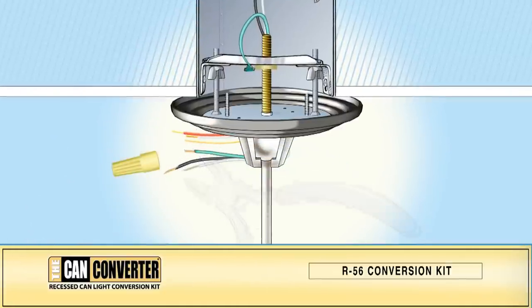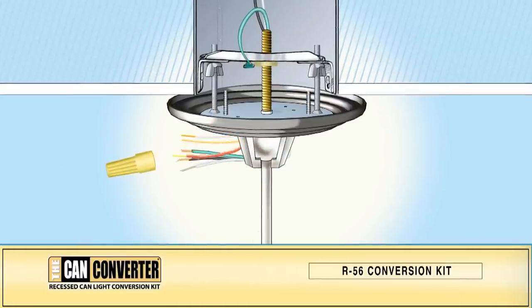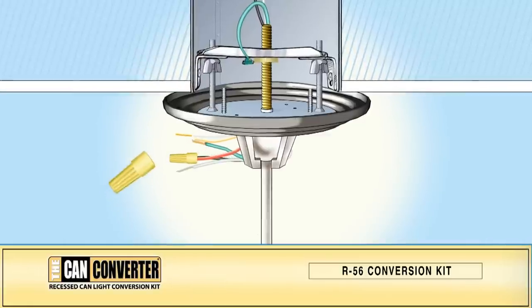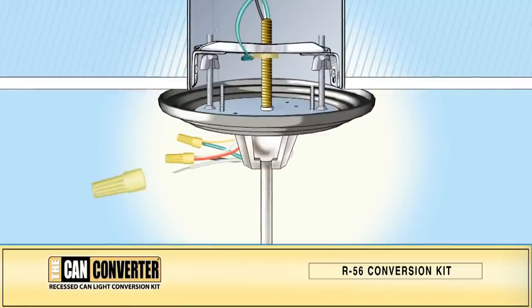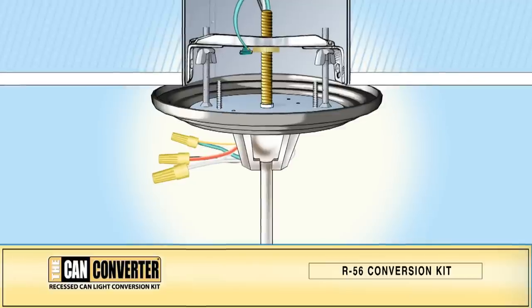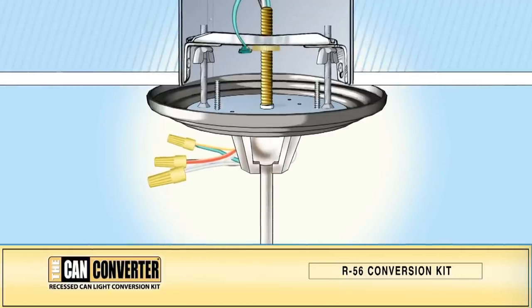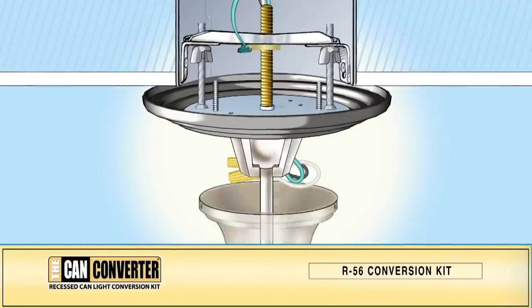Cut off any excess wire. Using wire nuts, pair together the fixture's hot wire and the power outlet adapter's hot wire, the subsequent neutral wires, and the ground wires. Capture the wiring inside the fan canopy.